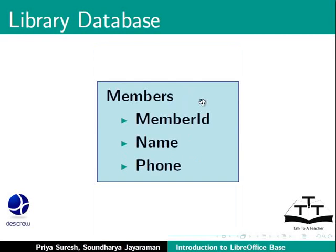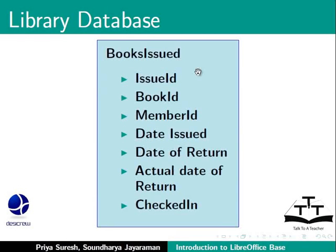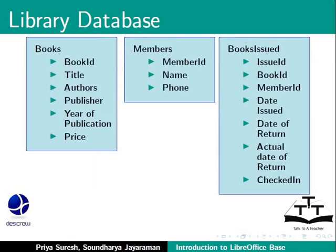Similarly, a members table can have columns like name and phone, and a Member ID to uniquely identify each member. We can track the books issued to members in a third table called Books Issued. This table will track the book issued, the member, date of issue, date of return, actual date of return, and whether checked in or not. We can establish relationships among these tables to interlink the data in them, helping us to manage relational databases.